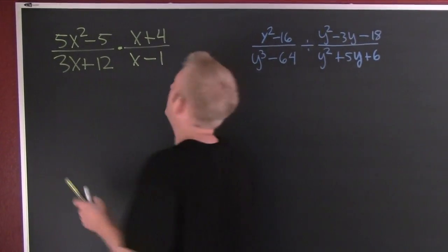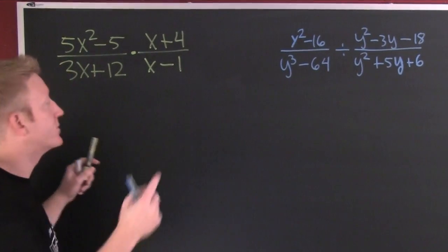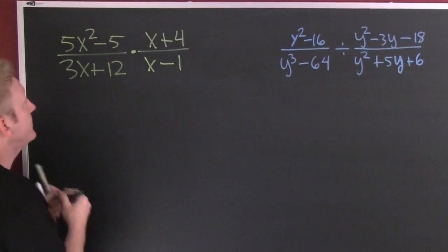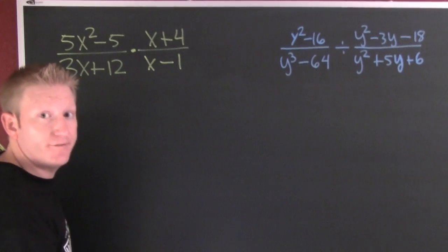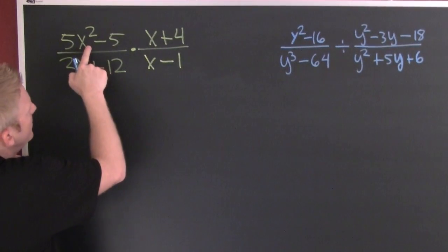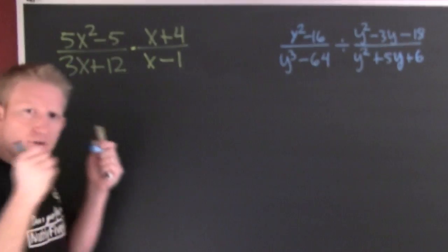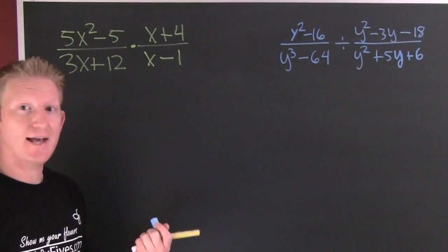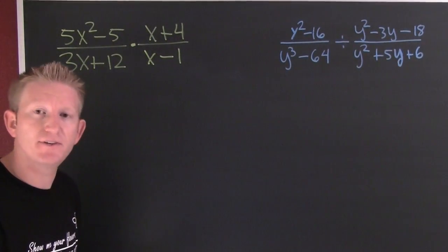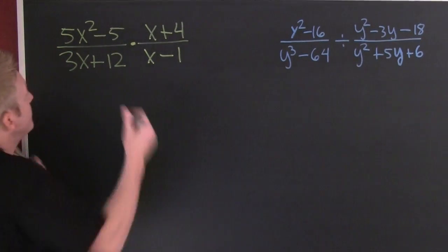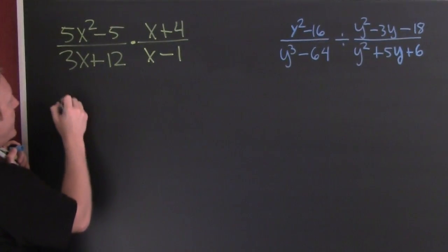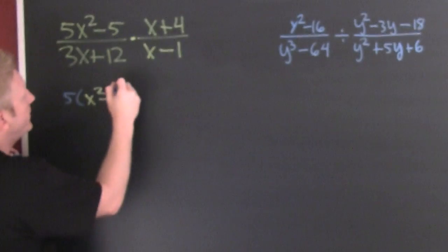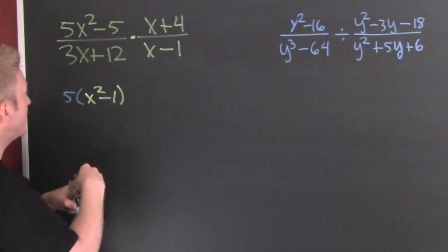Up here in this multiplication example — I know it's multiplication because it has the dot in the middle. When in doubt, factor first. What can I do up here? First rule of factoring. If you need to catch up on factoring techniques, don't forget to check out the factoring videos. I'll pull out a five, and leftover on the inside I'm going to have x squared minus one.